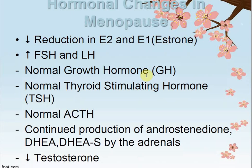Normal growth hormones remain in normal range. Thyroid-stimulating hormones remain normal. Adrenocorticotropic hormone (ACTH) — related to adrenal cortex and kidney functioning — remains normal, contributing to production of adrenocortinoids, DHEA, and DHEAS by the adrenal gland. DHEA (dehydroepiandrosterone) and DHEAS levels remain in normal range, but testosterone levels will decrease.